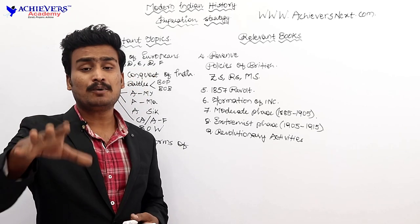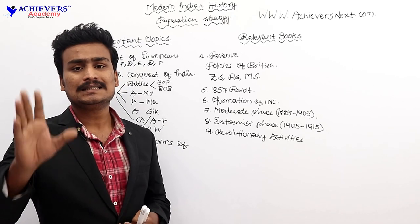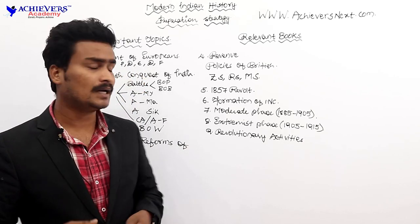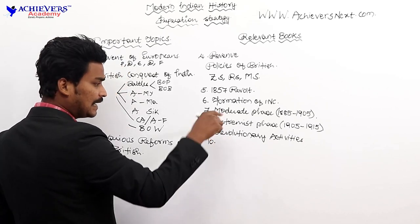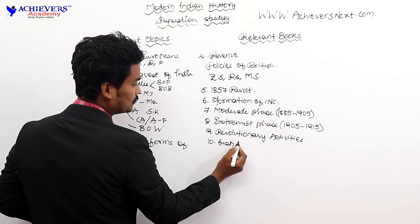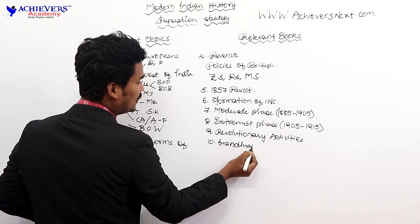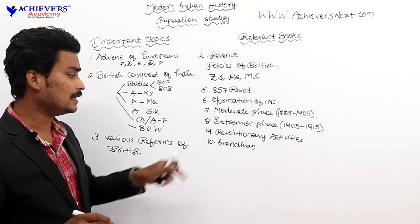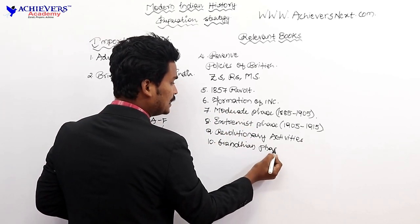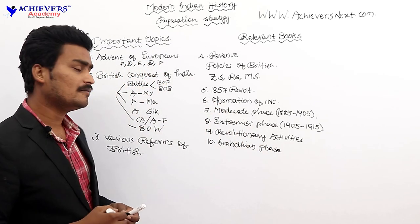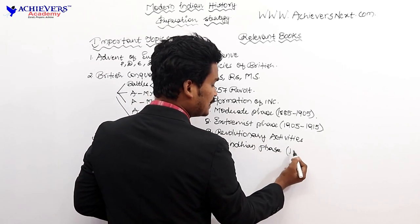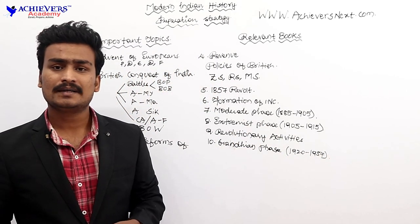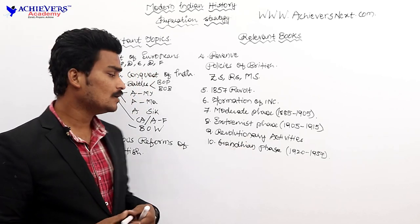After revolutionary activities, we have important incidents such as Jallianwala Bagh, the Rowlatt Act, and Chauri Chaura. Following these, we enter the Gandhian Phase — when Gandhi entered the Indian freedom struggle. This phase runs approximately from 1922 to 1937.